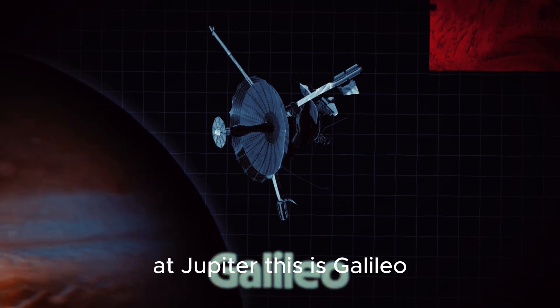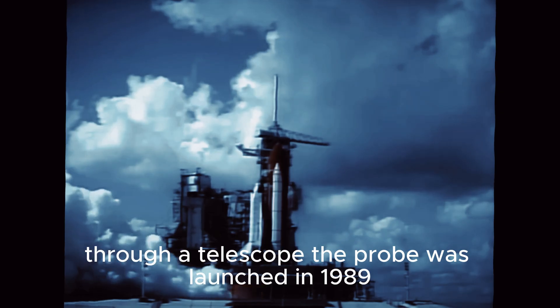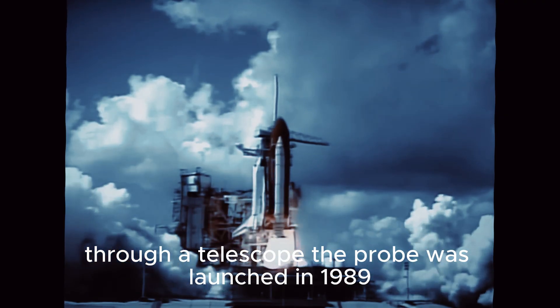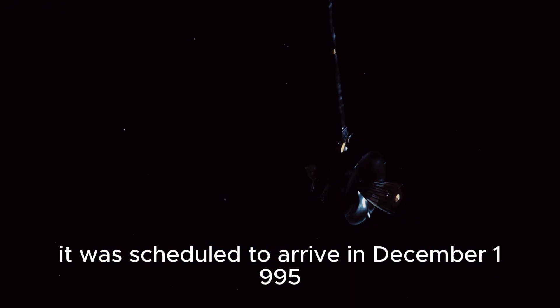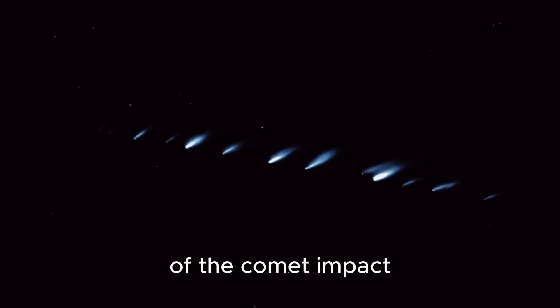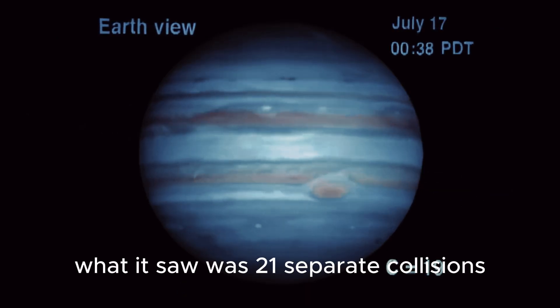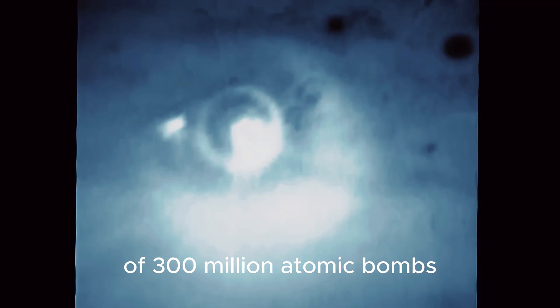This is Galileo, named after the first astronomer to have studied the planet through a telescope. The probe was launched in 1989 on a mission to investigate Jupiter and its moons. It was scheduled to arrive in December 1995, and now it had a clear view on its approach of the comet's impact. What it saw was 21 separate collisions over the course of six days, with the largest chunk of comet unleashing the equivalent energy of 300 million atomic bombs, making it the biggest explosion ever caught on camera.